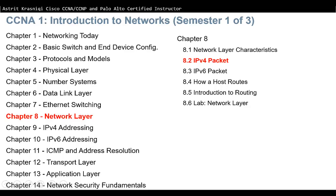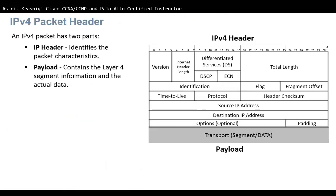Hello and thank you for watching the second lesson of chapter 8, which is 8.2 IPv4 packet. As we learned in the previous lessons, IPv4 is one of the primary network layer communication protocols. The IPv4 header is used to help the packet move from the source towards the destination — from the source to the next hop, to the next hop, to the destination.